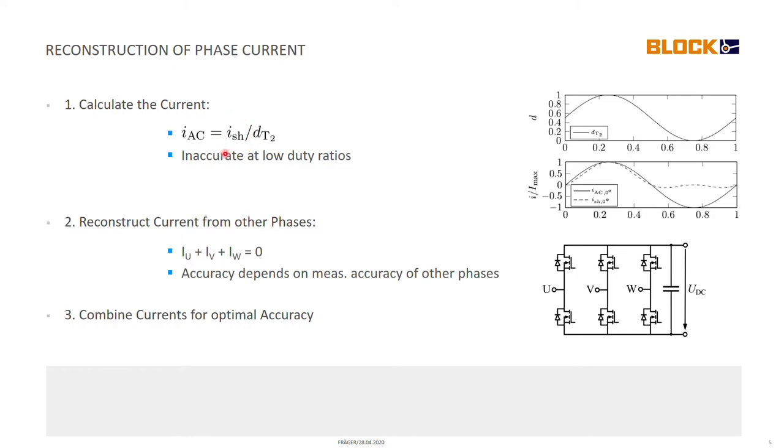What it is, we just divide the average shunt current, the average measured current that we measure with the ADC by the duty ratio of the transistor T2 of the bottom side transistor. This is also shown over here. We have the duty ratio for this phase, just a one period signal with a modulation index of one. And then we have the current flowing into this cell shown with the solid line and we have the measured current that appears at the ADC shown with the dashed line. We see that for low duty ratios of the transistor T2 we don't really measure a current at the shunt anymore.